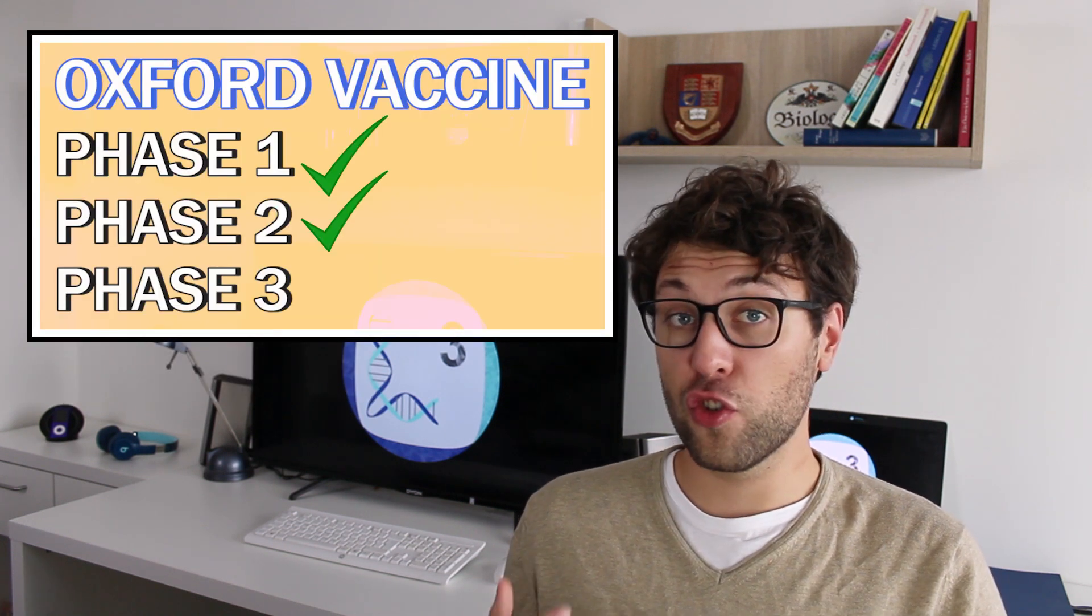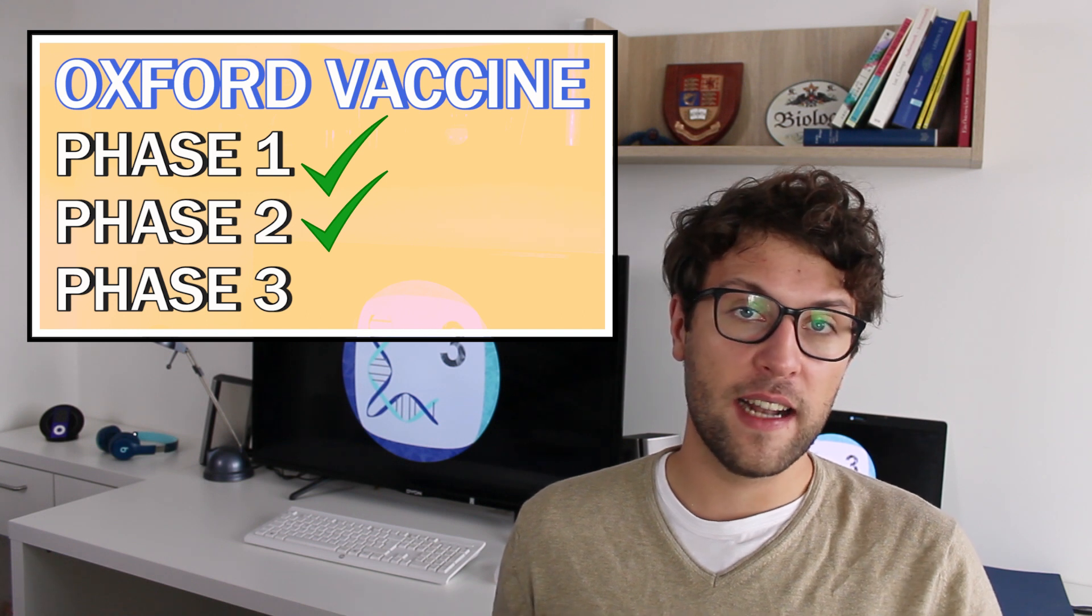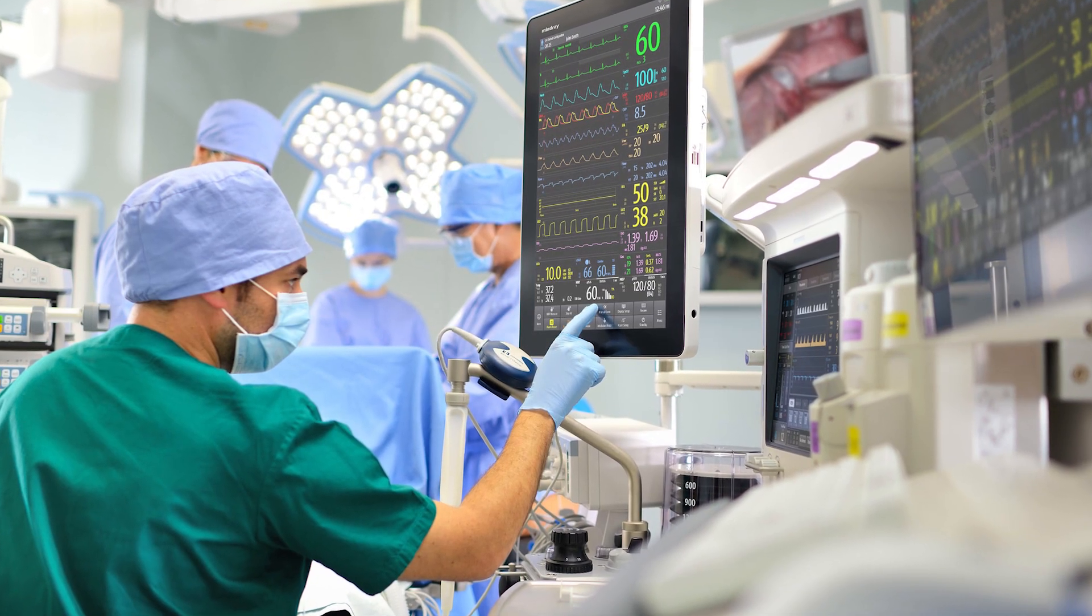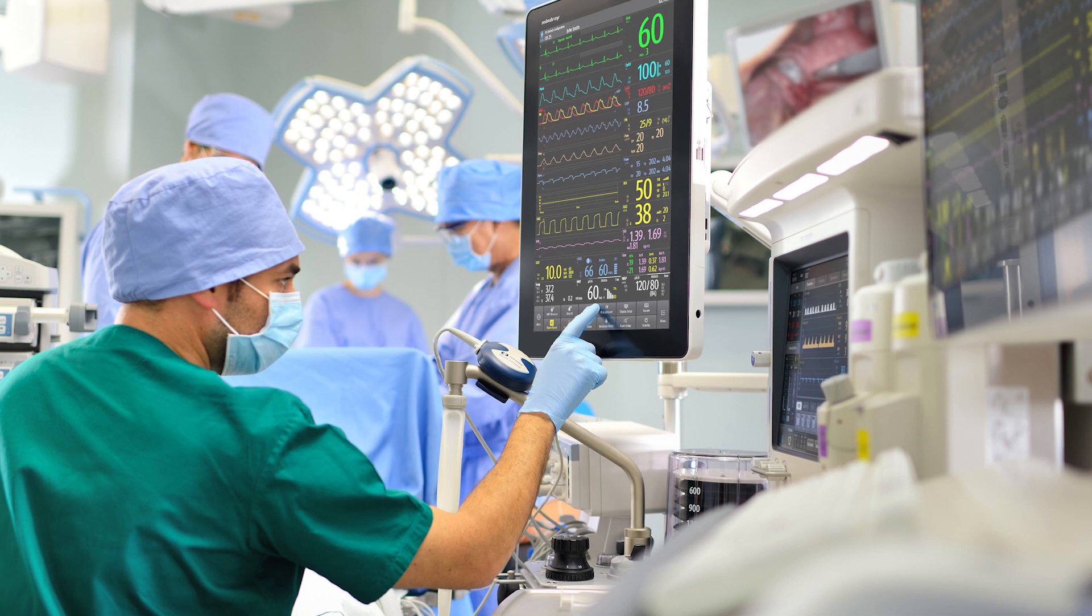In phase one and phase two clinical trials the Oxford vaccine has led to immune responses and mild adverse effects. Since these results have been quite promising the Oxford vaccine will further be tested in 50,000 people in Brazil and maybe also in the UK or the United States. However you probably heard that clinical trials using the Oxford vaccine had to be paused. Well one participant actually showed severe side effects but after some assessment the trials are now allowed to go on again.